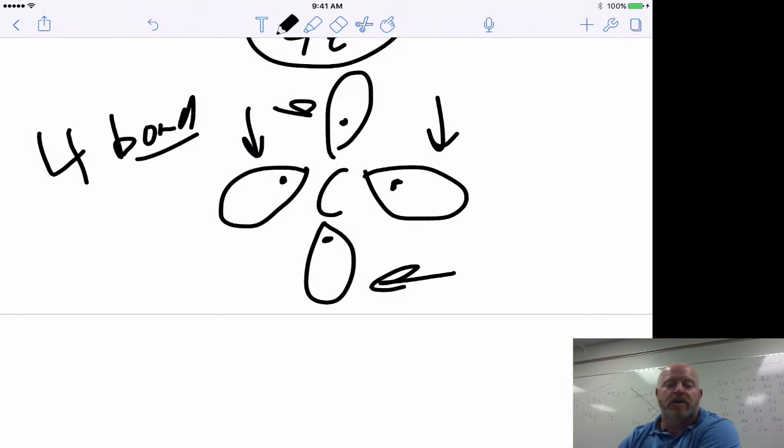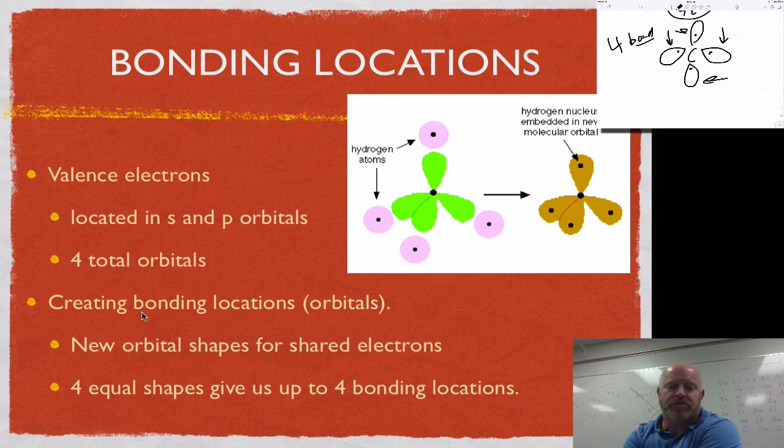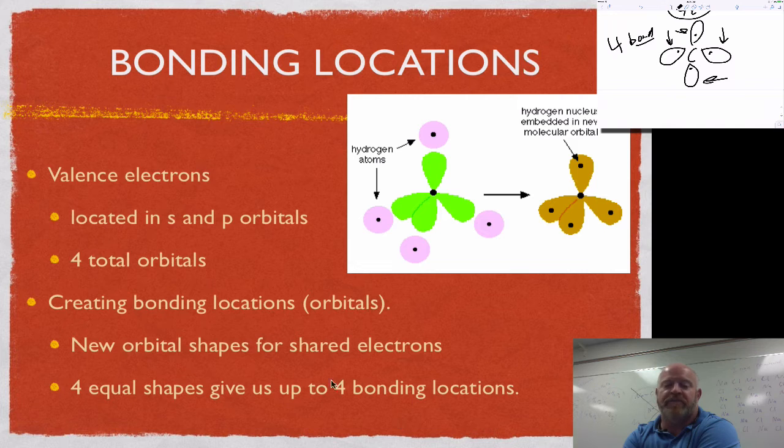These different locations are now all equal. They're equal shape and we have a possible four. Not all atoms do four bonds. Some do one, some do two, some do three, up to four. But we have a possibility of up to four to work with for most atoms.